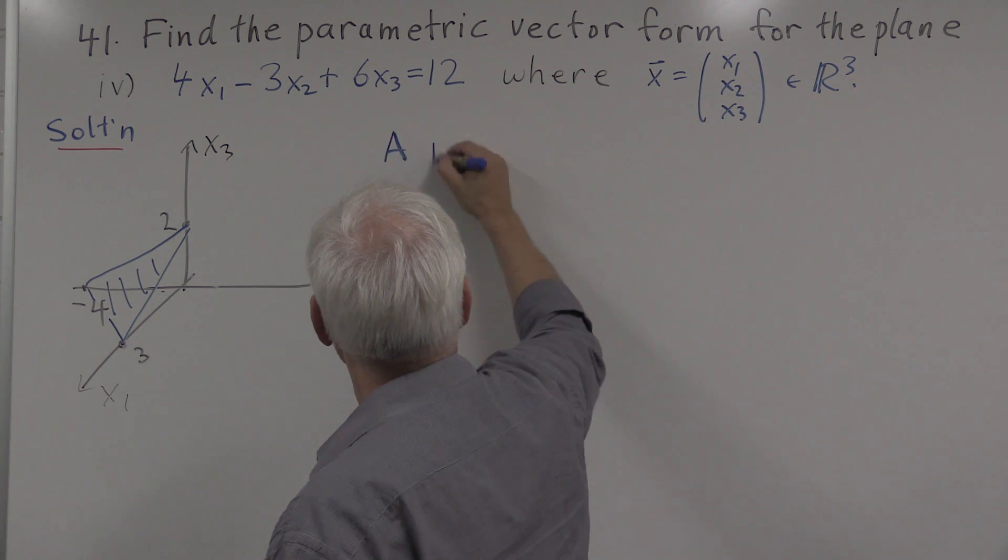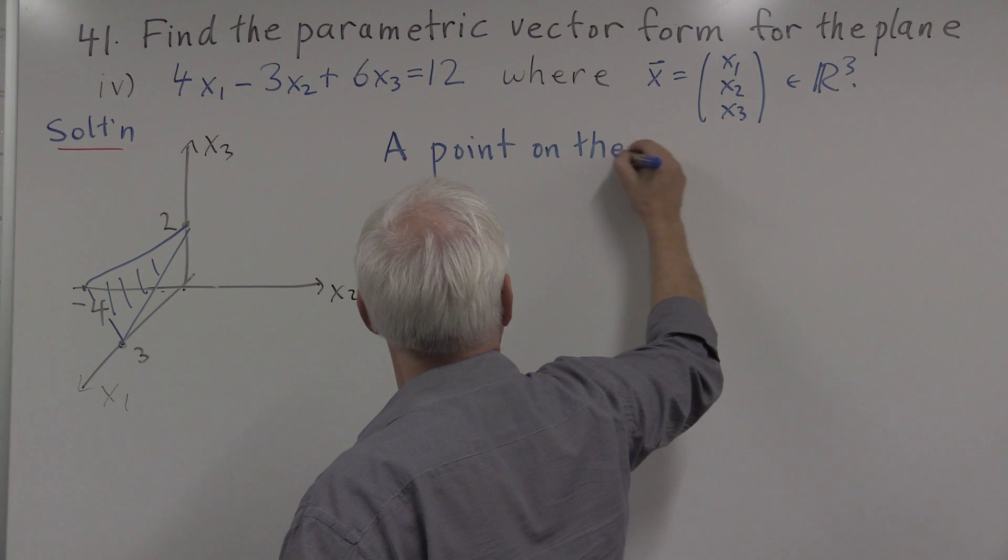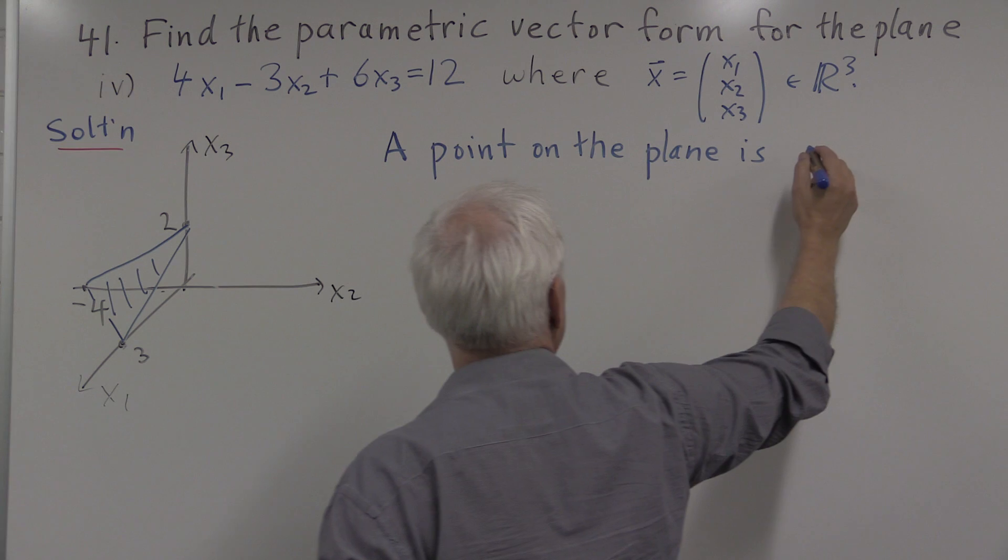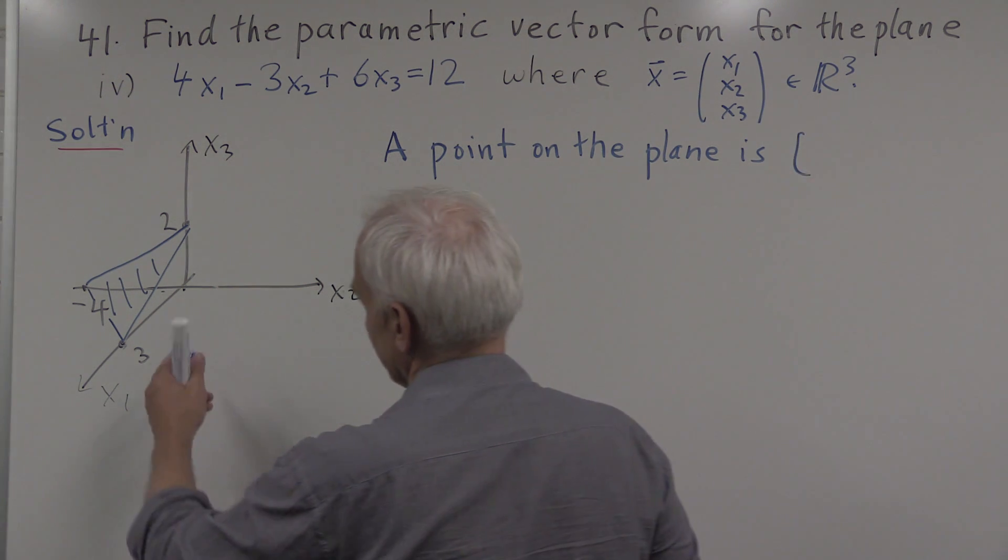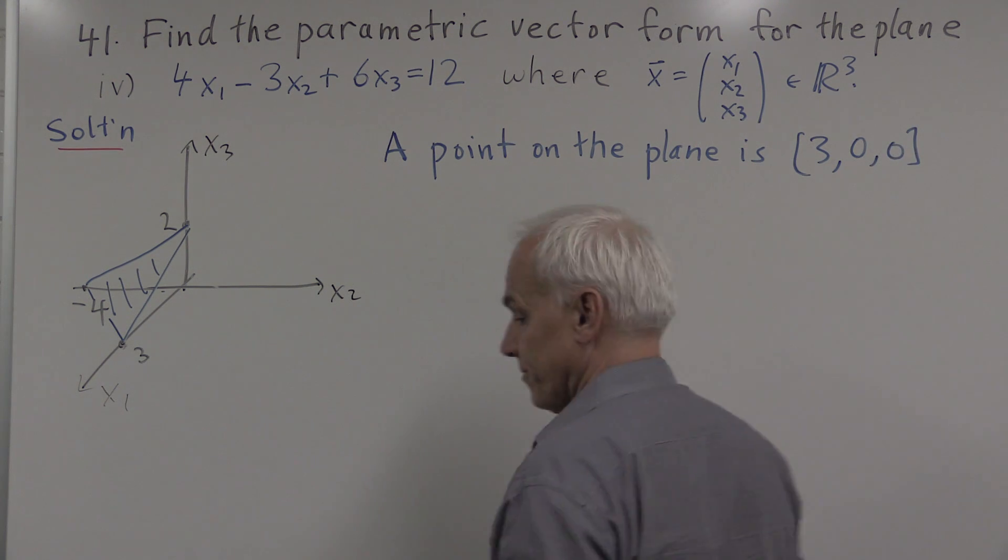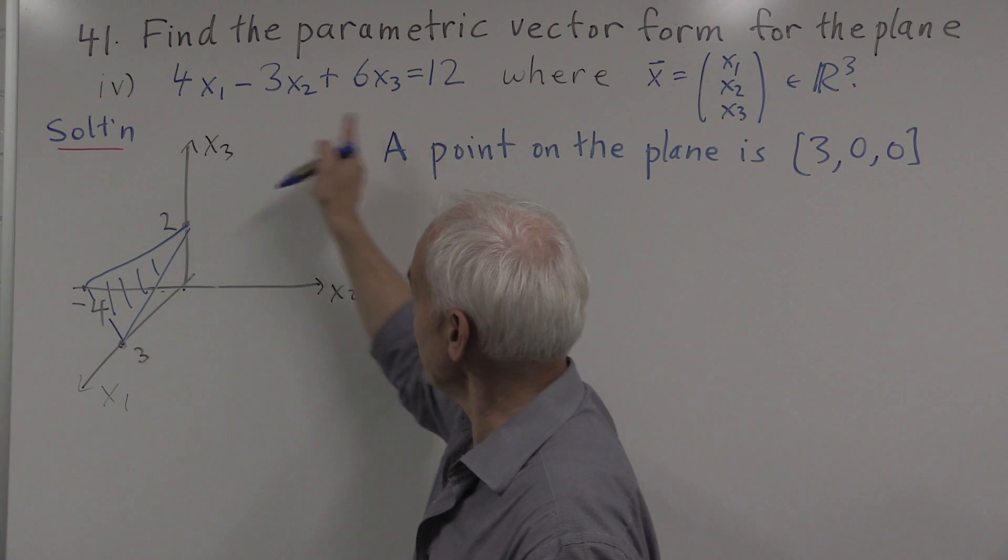So a point on the plane is, well, the simplest one is the first one that we chose, perhaps three, zero, zero. That is a point on the plane because it satisfies the equation.